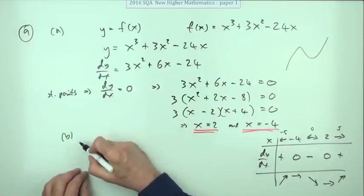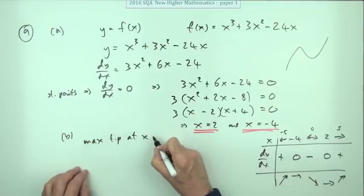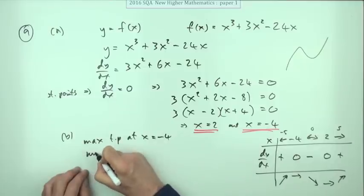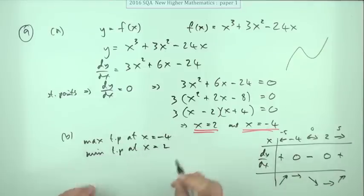So it ends up looking like this, which you knew all along. So you know you've got a maximum turning point at x equals negative 4, and you've got a minimum turning point at x equals 2, which I'll just state in case that's included in the marks.